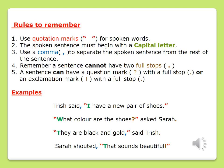Take note, boys and girls, that the first sentence has got its quotation marks, its comma, and a capital letter. When we look at the second example — "What colour are the shoes?" asked Sarah — you would find that we have a question mark at the end of that sentence. Therefore, we do not have a comma. And if you look at the fourth sentence, Sarah shouted, "That sounds beautiful!" — in that sentence we have a comma and we have an exclamation mark. This summarizes our rules for direct speech.